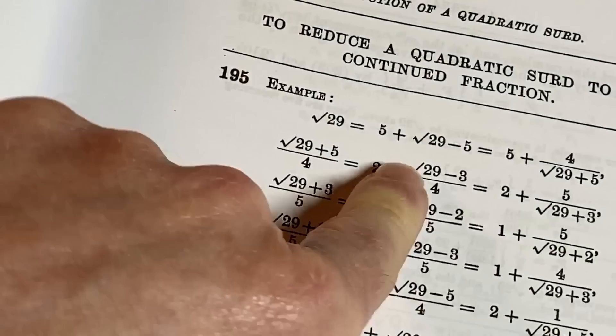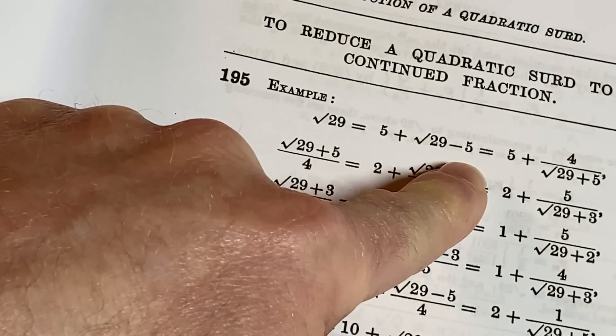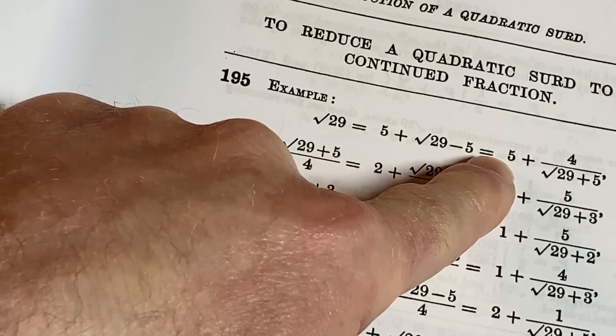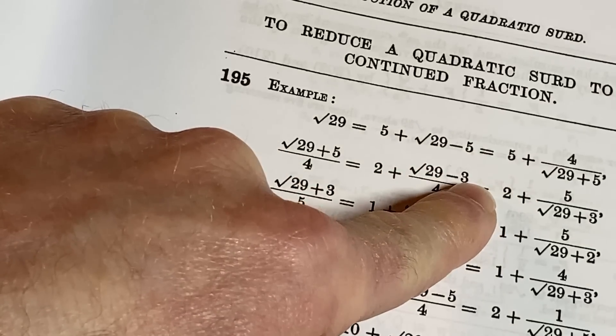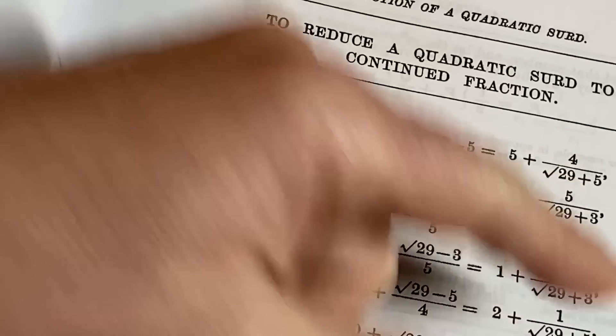Let's skip ahead here. To reduce a quadratic surd to a continued fraction. Wow. Look at that. So they take the square root of 29. Let's zoom in there. And then you add and subtract five and then they rewrite it that way. Wow. It looks like they did some rationalization maybe. I'd have to get a pencil, but I think that's what they did there, right? They square root of 29 plus five times that is going to give you 29 minus 25, which is four. Yeah, yeah, yeah.